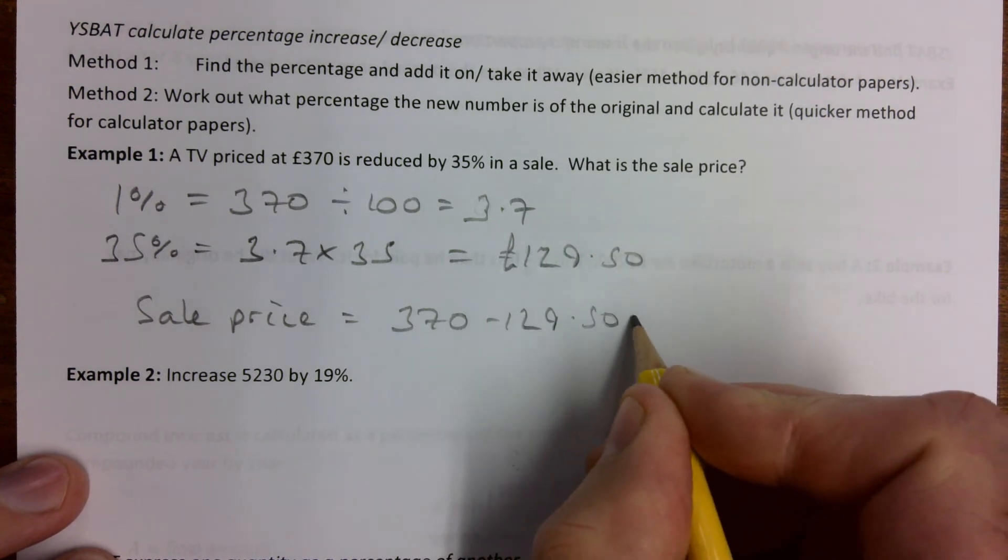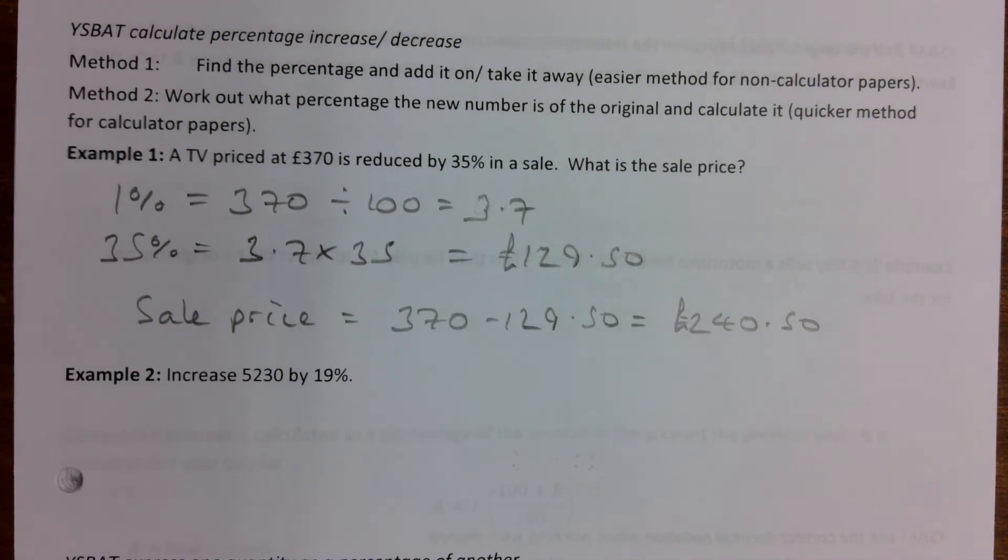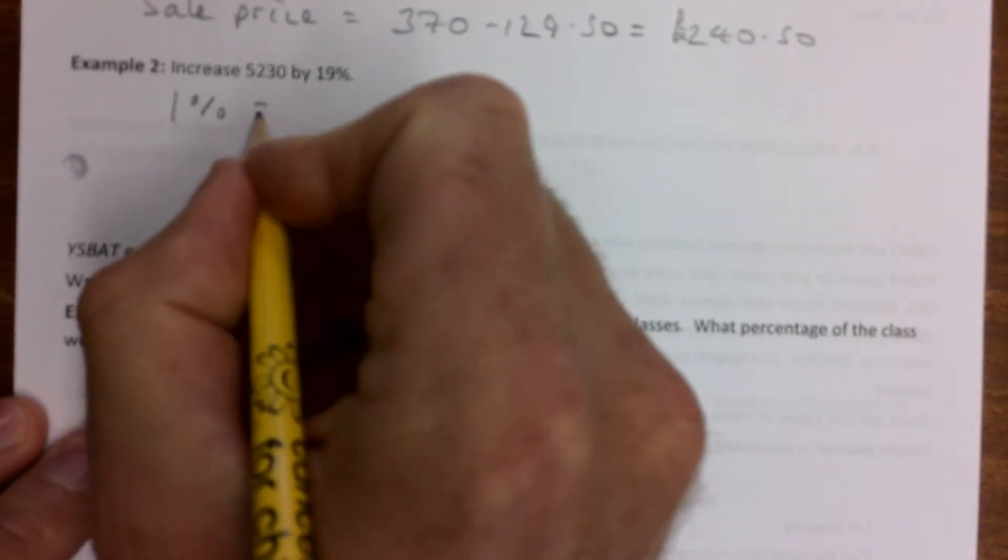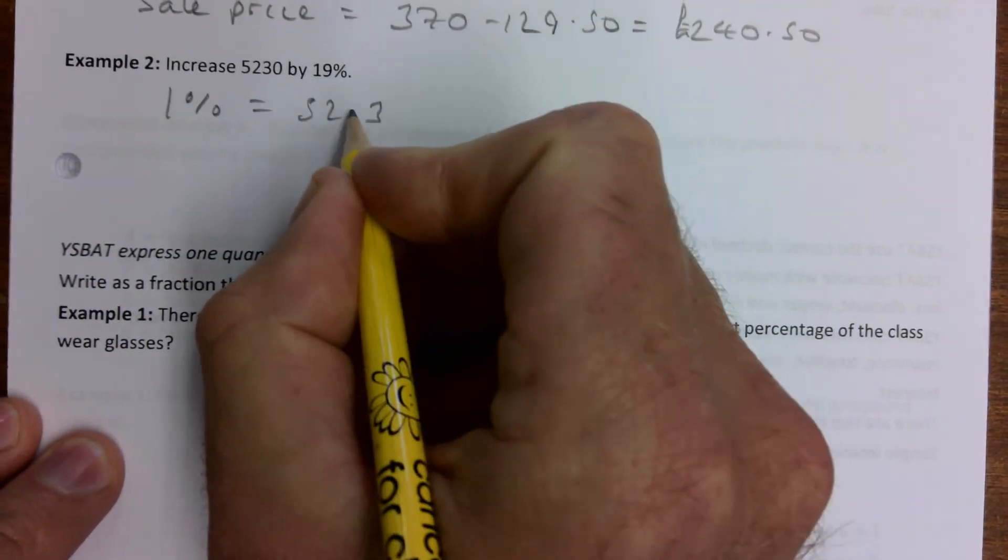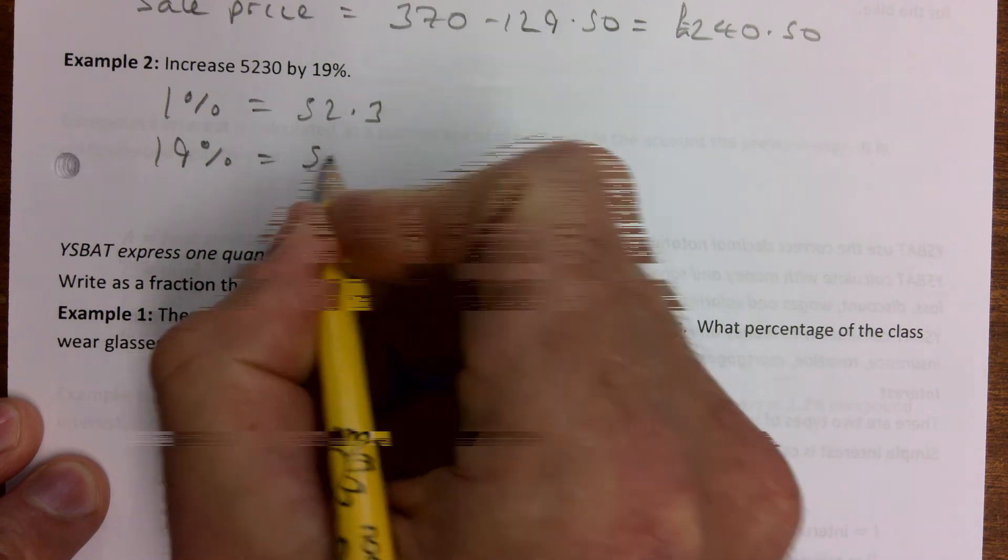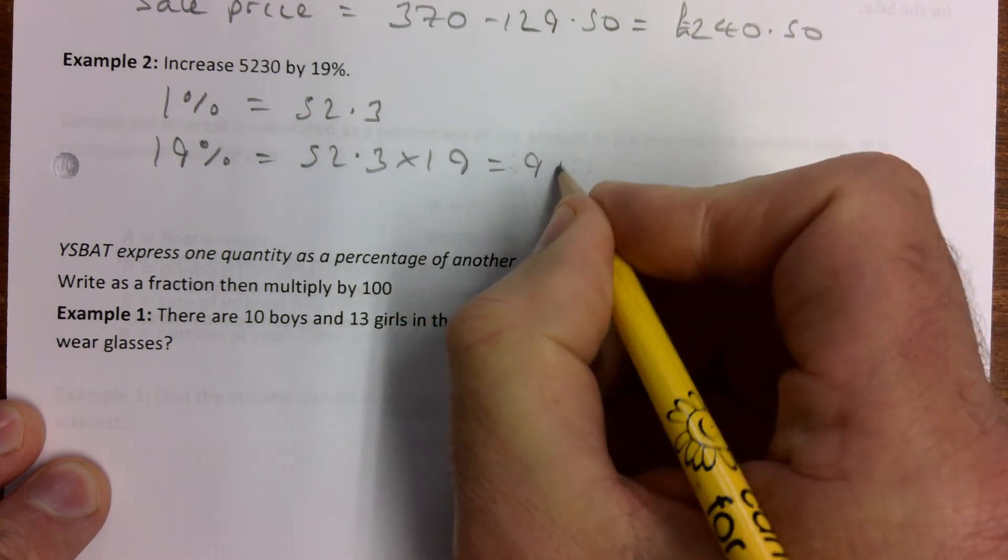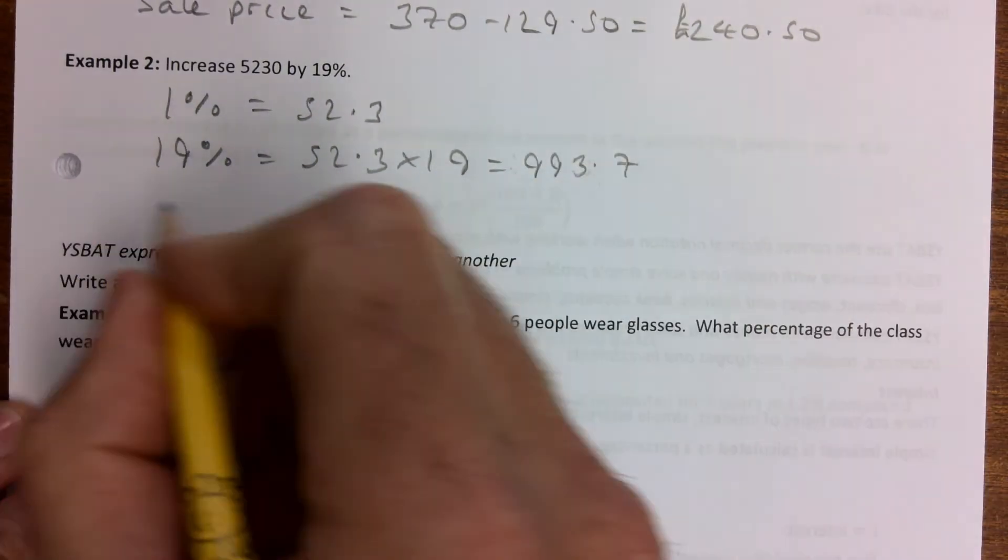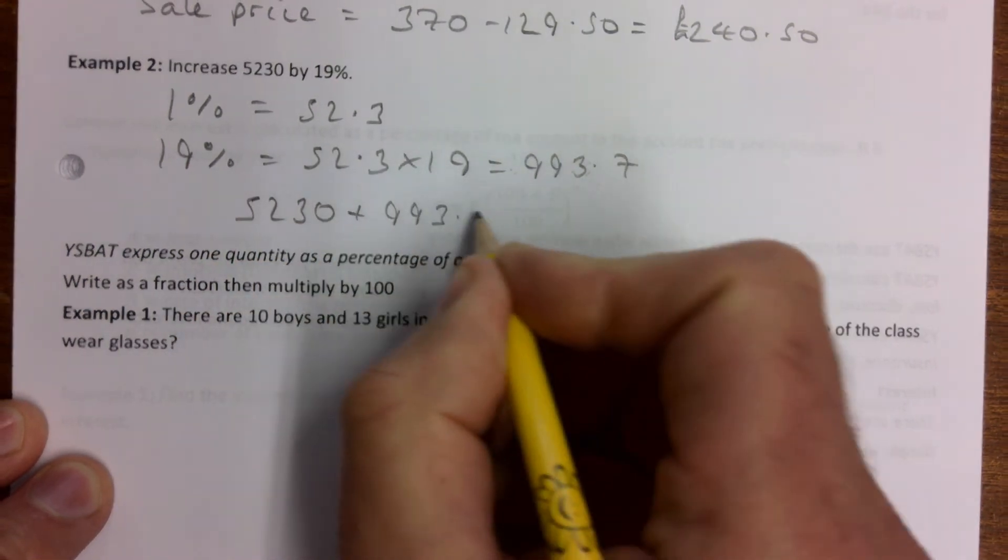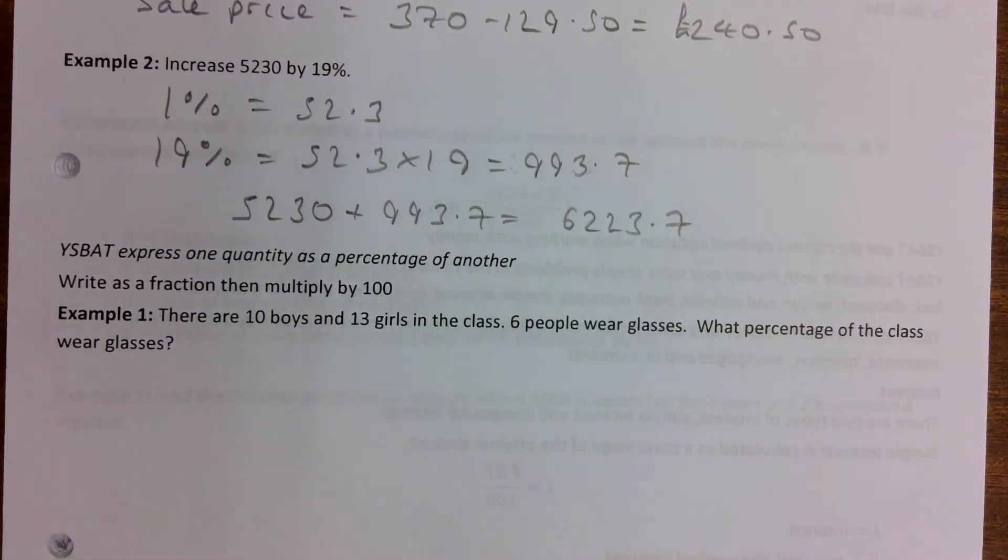Similarly, then increase £5,230 by 19%. 1% is equal to £52.3. See what I've done there, I've just divided by 100. 19% is equal to £52.3 multiplied by 19. That gives us £993.7. So we're increasing £5,230 plus £993.7 equals £6,223.7.